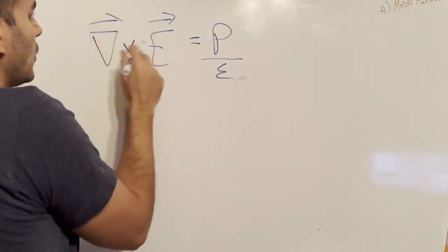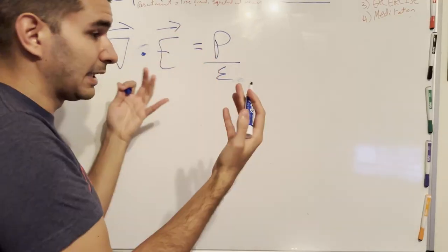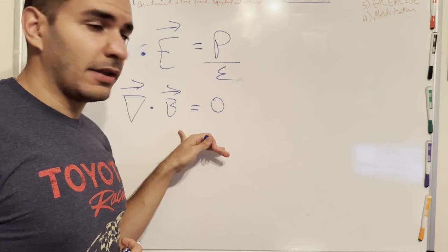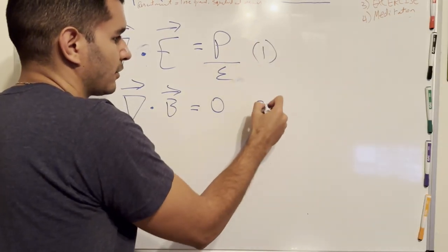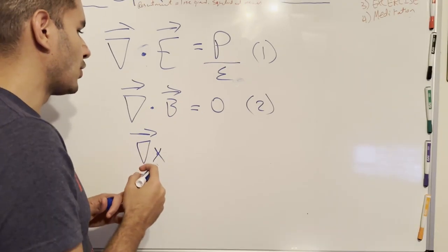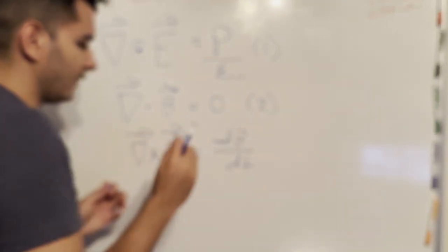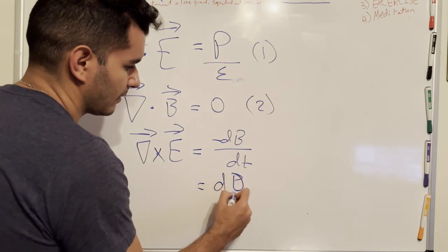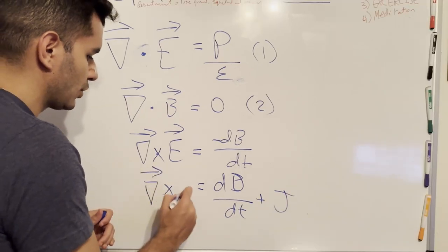It's a dot product, not a cross, because it's divergence. So this is the law of electrostatics. The second part of Gauss's Law tells you there is no such thing as divergent magnetic behavior — no magnetic monopoles. Third, it's going to be a curl — a cross product. If we observe a changing magnetic field, we get a curling electric field. Likewise, we use D/dt plus J: if we have a changing electric field, that's going to induce a magnetic field.